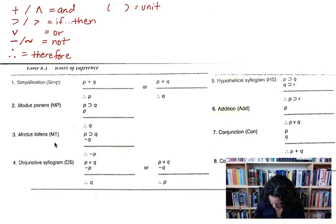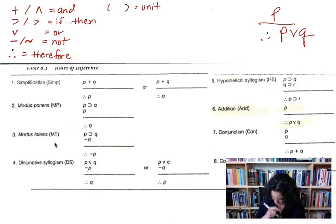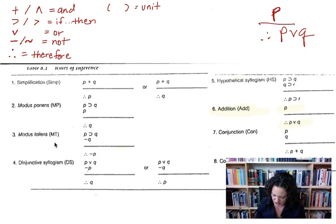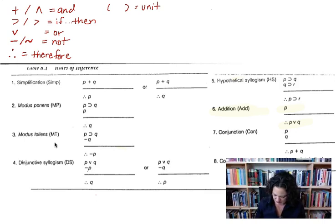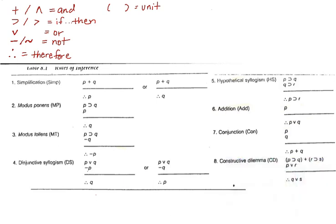Let's do addition next. This one's easy. It says: P, therefore P or Q. It's just saying we have P, so now we can have P or anything else. We have tacos, therefore we have tacos or burritos. P or anything else — and we can use that now in another argument. With that P or Q, we can set up a disjunctive syllogism.